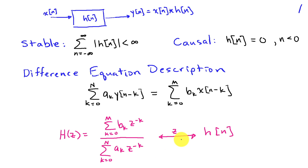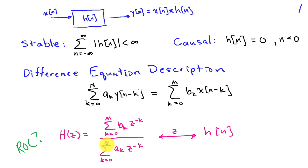The system function is just the Z transform of the impulse response. So we have conditions for stability and causality expressed in terms of the impulse response, and now we're going to look at what those mean in terms of the parameters of the difference equation. When I look at inverting this Z transform H of Z, I need to know what the ROC is — and that's something not specified by the difference equation.